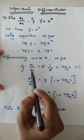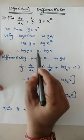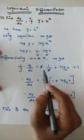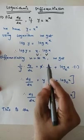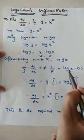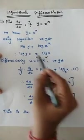So u times derivative of v: log x times 1/x, plus v (that is log x) times derivative of x (that is 1). The x terms will cancel out.